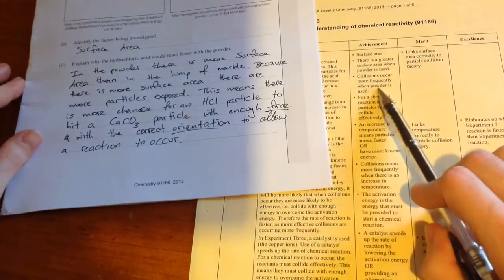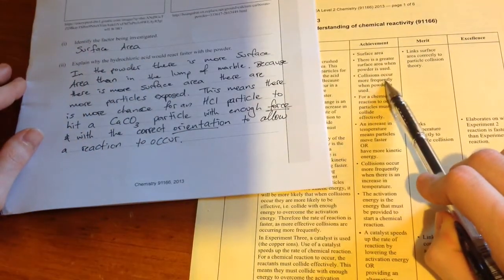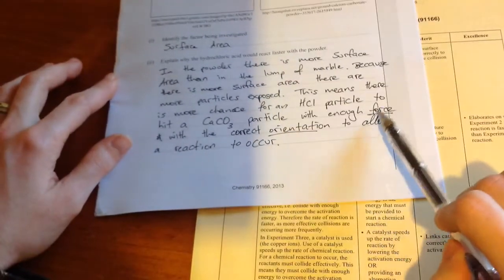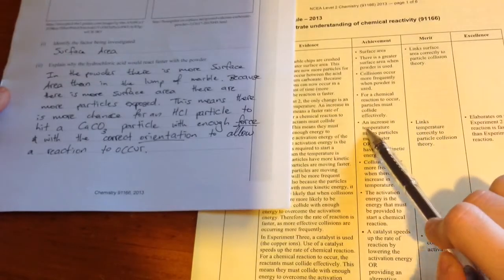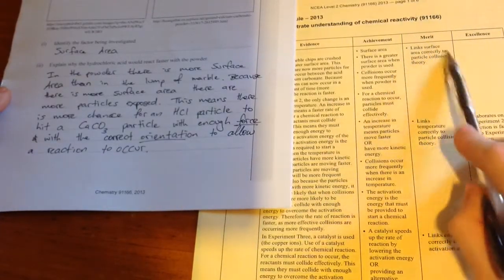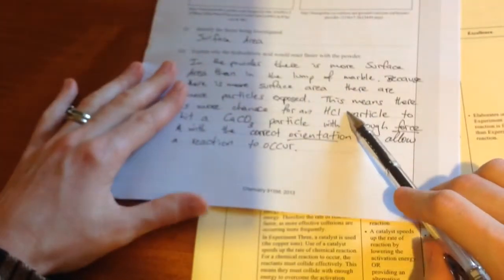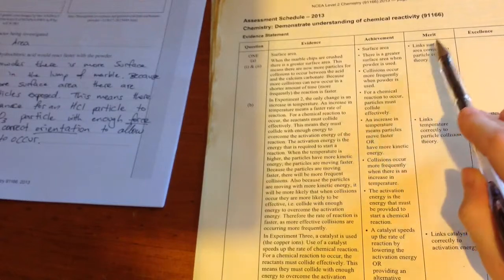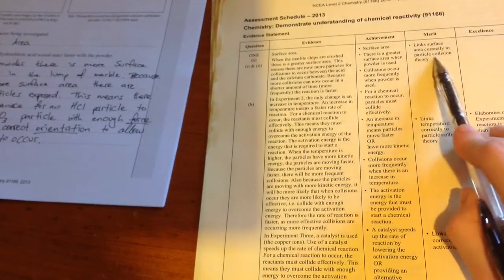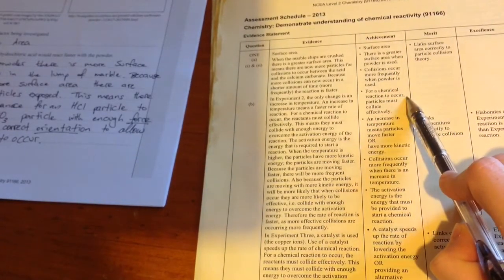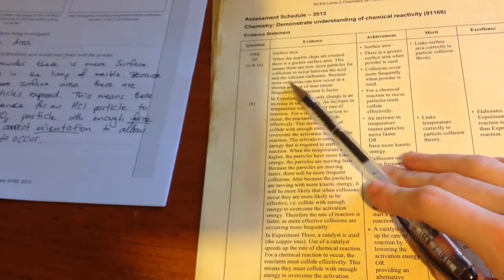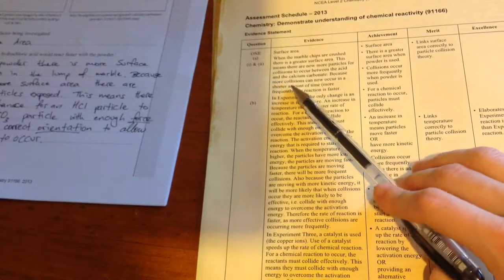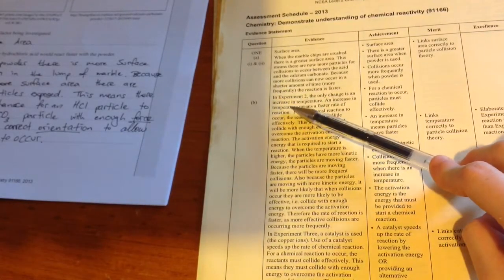Possibly that would be a way to improve my answer. For a chemical reaction to occur, particles must collide effectively. That's the idea of the force in the orientation. An increase of temperature, that's the next question. So that answer would hopefully, because it's got all these criteria, I reckon that would be linked surface area correctly to particle collision theory. And their answer here, they've said just that more collisions occur because there is greater surface area, the reaction therefore happens faster.